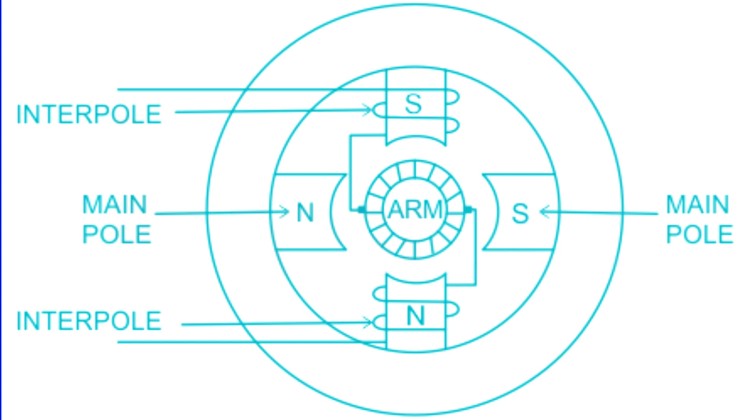In generator mode, they adopt the polarity of the succeeding pole, the one next in the rotation sequence. In motor mode, they take on the polarity of the preceding pole, which has already passed in the rotation sequence.